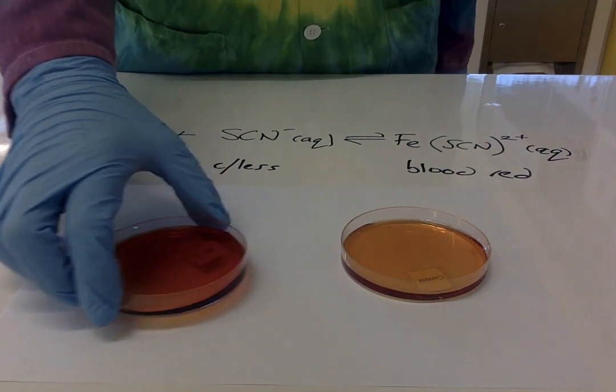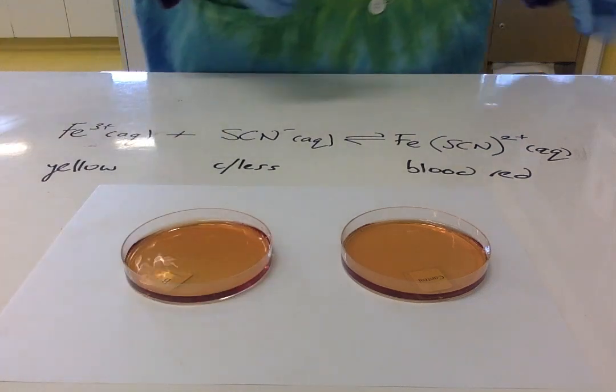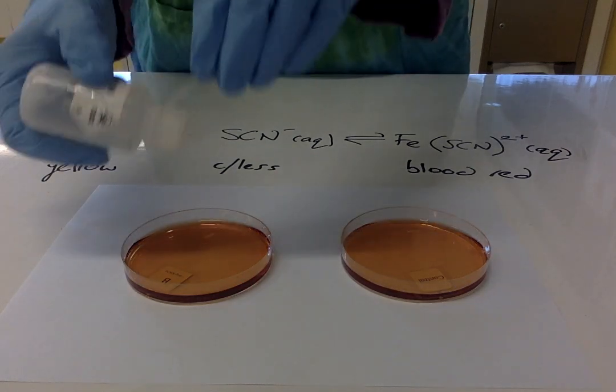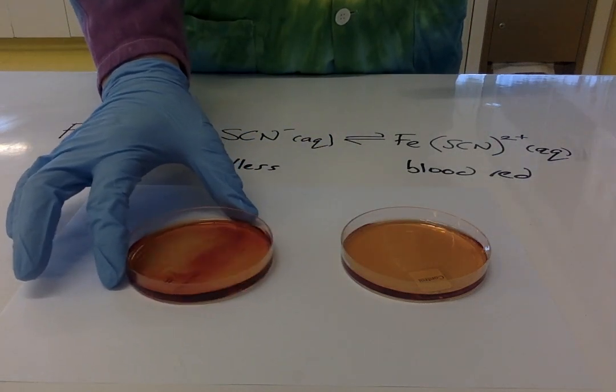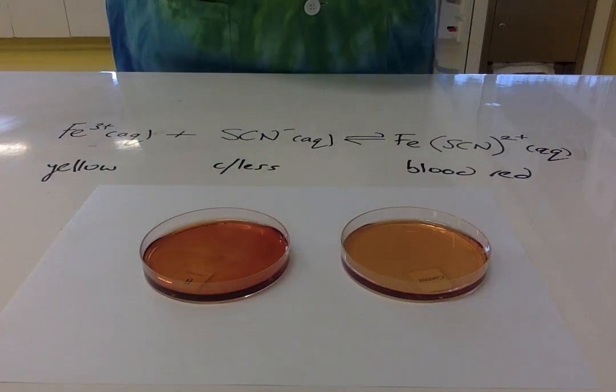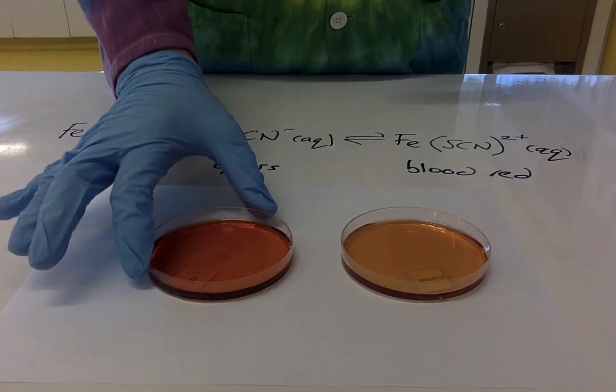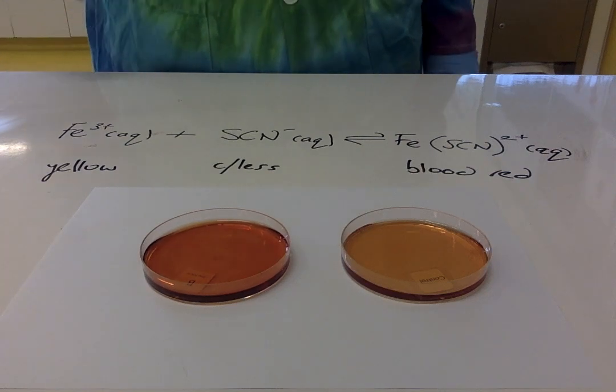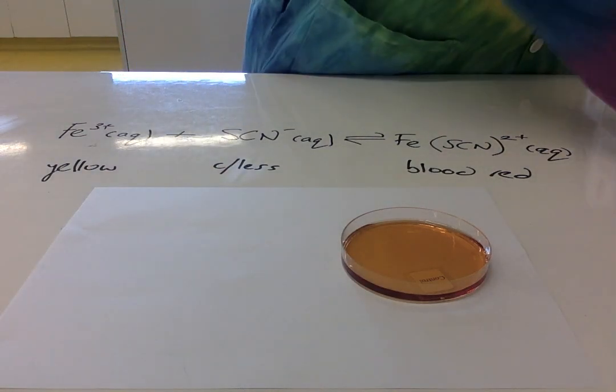The next test I'm going to do is to add some potassium thiocyanate, so adding thiocyanate ions. Again, you can see a distinct darker red color appearing, so you get an equilibrium shift to the right to use up the extra thiocyanate ions.